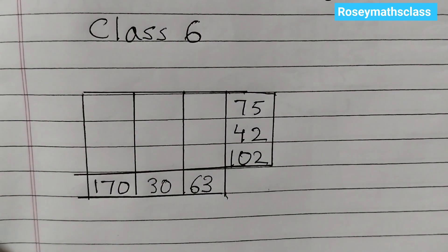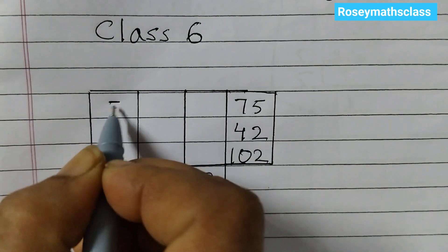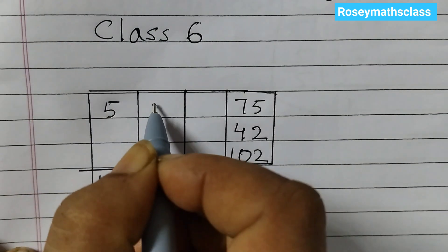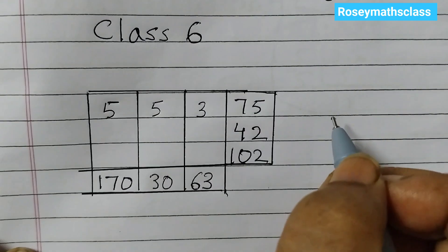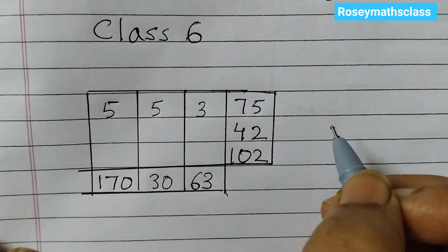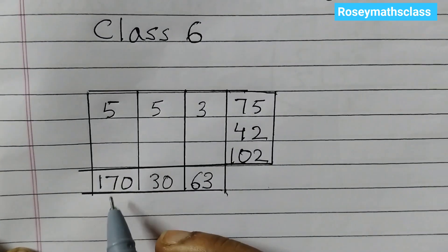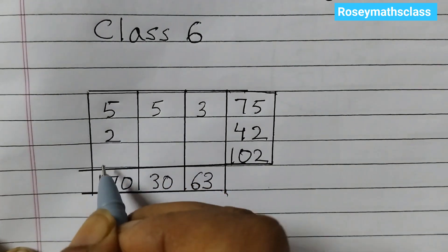So we need to fill up with the prime numbers. So first we will write here 5 times 5 times 3. 5 times 5 times 3 is 75, right? So here, 170, we can do 5 times 2 is 10, 10 times 17 is 170.